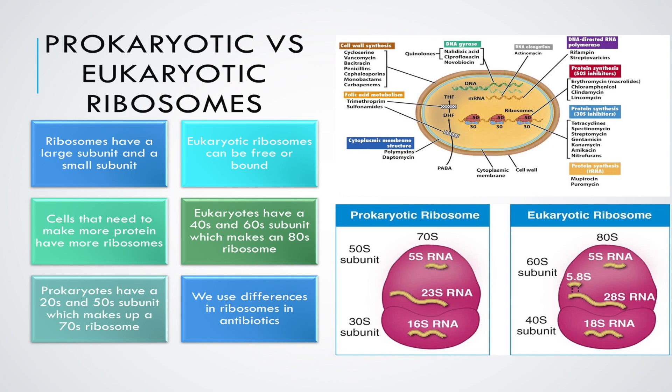Some cells will need to make more protein than others, and eukaryotic cells that specialize in producing proteins will have a larger number of ribosomes. For example, the pancreas is responsible for producing and secreting large amounts of digestive enzymes, so the pancreatic cells that make these enzymes have a large number of ribosomes.